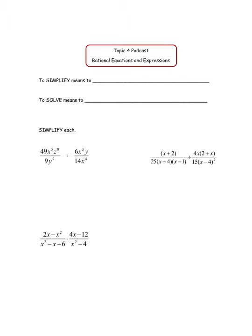So what's the difference? That's probably our first question. To simplify means to rewrite in an equivalent form — I often say, using some agreed upon rules. The agreed upon rules when simplifying rational expressions are to cancel common factors, add fractions together, write as a single fraction instead of two, and so on. To solve means to find the value or values that work in an equation.